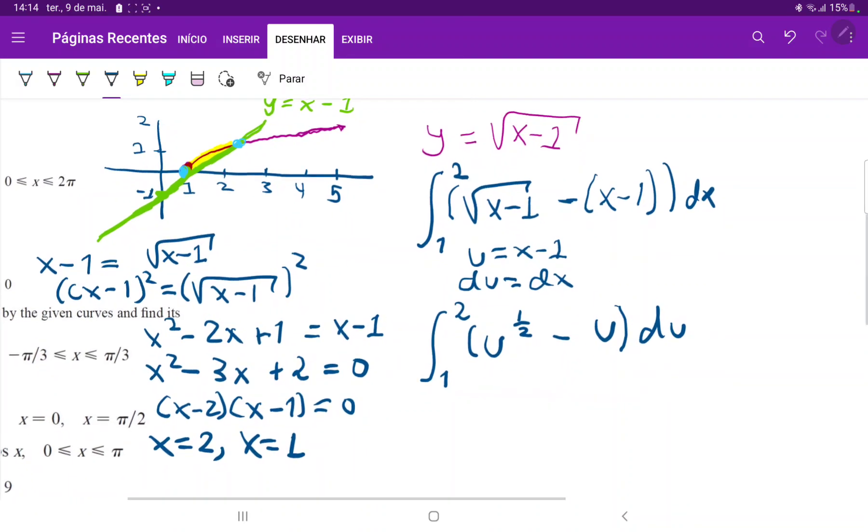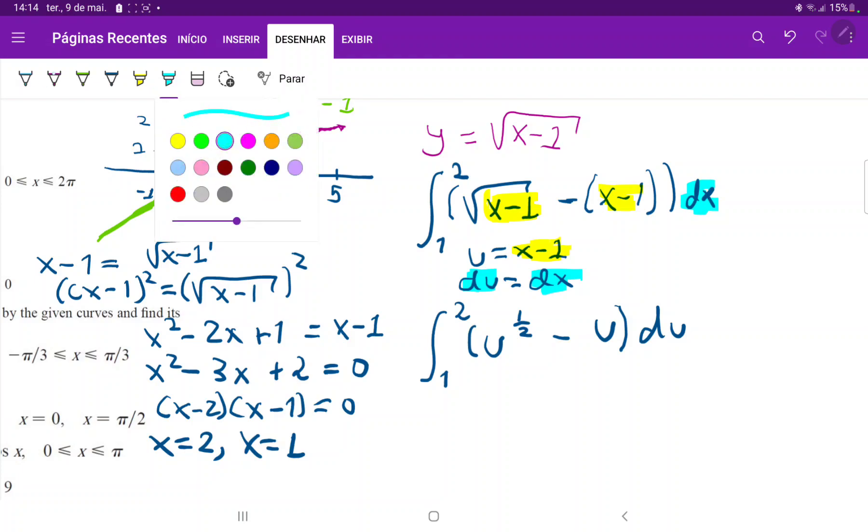So once I have made my substitution, and let me just highlight where I put this in so that we can easily track this. So once I substitute this, then I can just do my reverse power rule. So this is u to the three halves times two thirds minus u squared over two. Evaluate it from one to two.